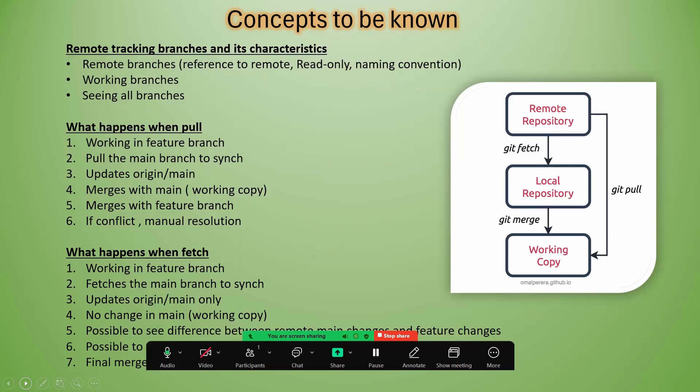Before getting to git fetch, we need to understand something from the basics: remote branches. When we work locally, we clone the repo and have the working copy. In local we also have the local repository, which contains remote branches — these are references to the remote branches. These branches are read-only, and the naming convention uses 'origin slash', for example 'origin/main'.